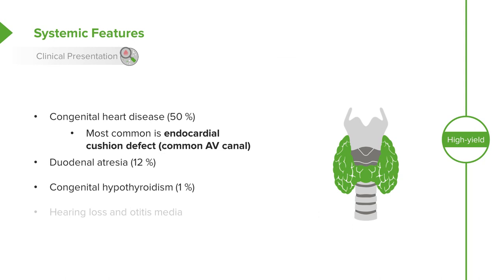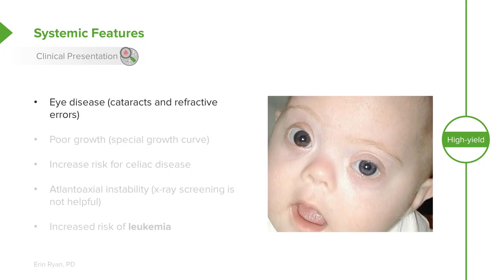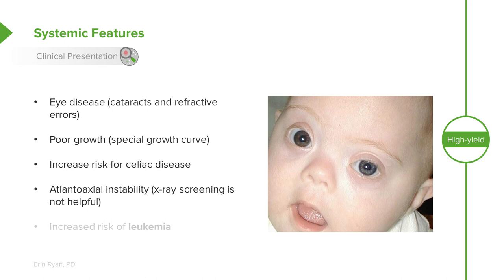Additional complications include congenital hypothyroidism, which occurs in about 1% of Down syndrome patients and should be caught on newborn screening. Hearing loss and frequent otitis media are also common. Patients may develop eye disease such as cataracts or refractive errors, poor growth — and they should be plotted on special Down syndrome growth curves — increased risk for celiac disease, and atlantoaxial instability (instability of C1 on C2). X-ray screening is no longer routinely recommended, though it may be required for Special Olympics participation. They also have an increased risk of leukemia.